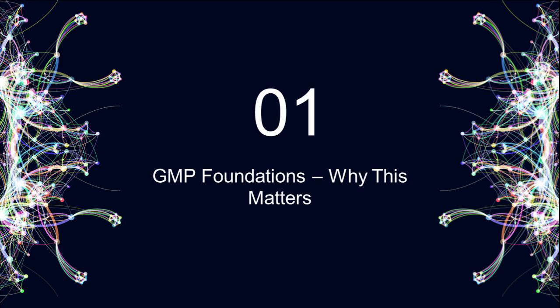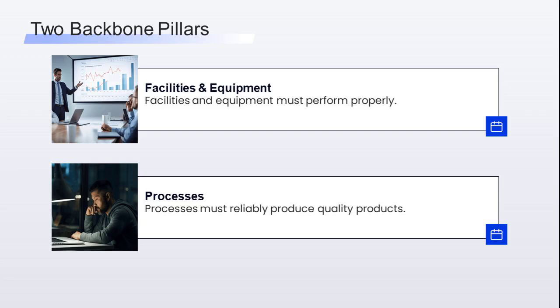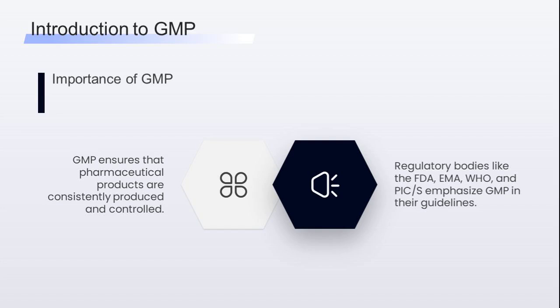Let's set the stage. GMP — good manufacturing practices — requires that pharmaceutical products are consistently produced and controlled. To meet this, GMP has two backbone pillars: facilities and equipment must perform properly, and processes must reliably produce quality products. This is where qualification and validation come in. Qualification proves that equipment, utilities, and systems are installed, operate, and perform as intended.